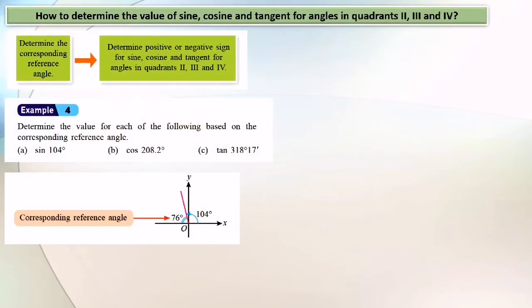How to determine the value of sine, cosine and tangent for angles in quadrant 2, 3 and 4? First step: determine the corresponding reference angle. You already learned what the corresponding angle is, right? After this, determine whether sine, cosine and tangent are positive or negative for angles in quadrants 2, 3 and 4. Now let us look at example 4.